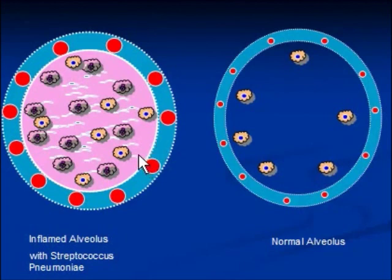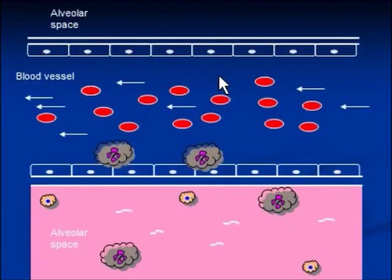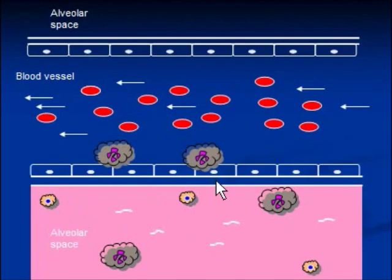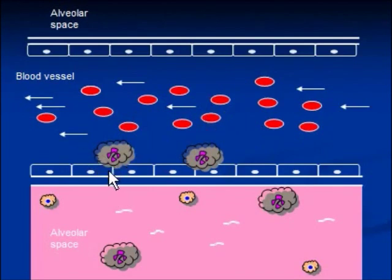Now let me show you a longitudinal cross-section from this interface. This is a blood vessel; these are endothelial cells. This is a normal alveolar space filled with air. This alveolus is filled with exudates. As a result of cytokine release, neutrophils are deployed to the area of infection. They are heavier than red blood cells, so they push the endothelial cells apart to make their way into the alveolar space and start the process of phagocytosis.